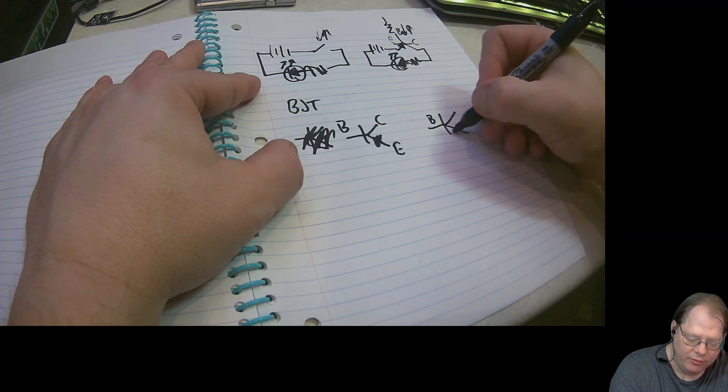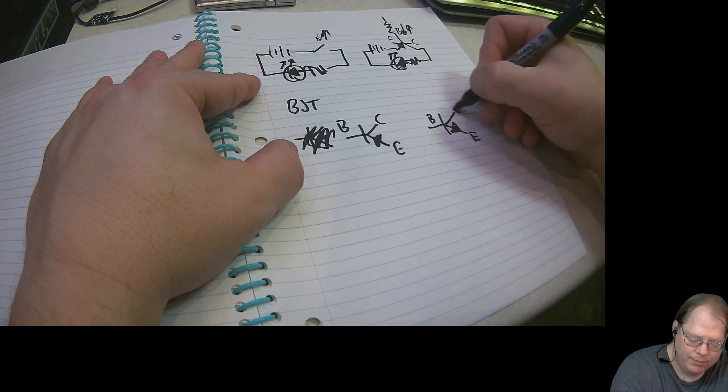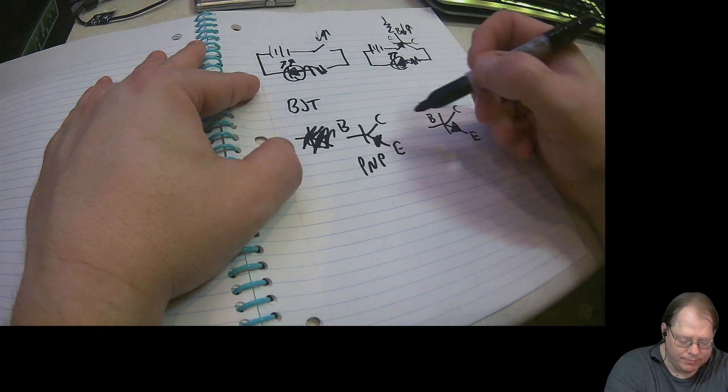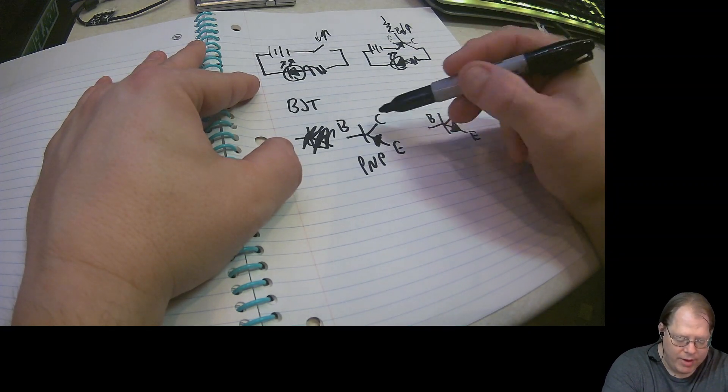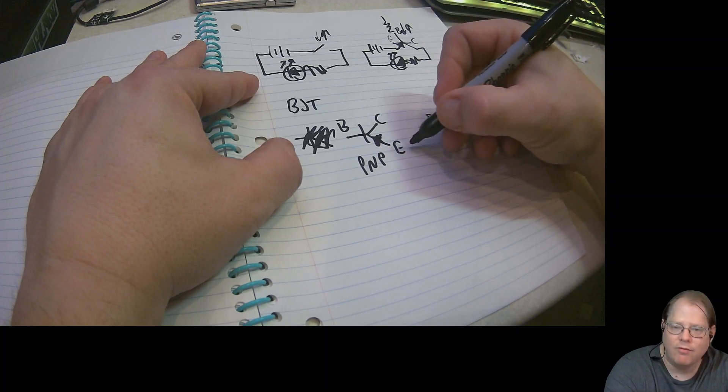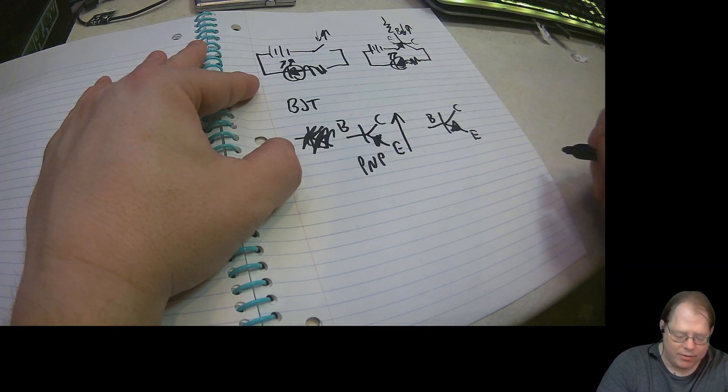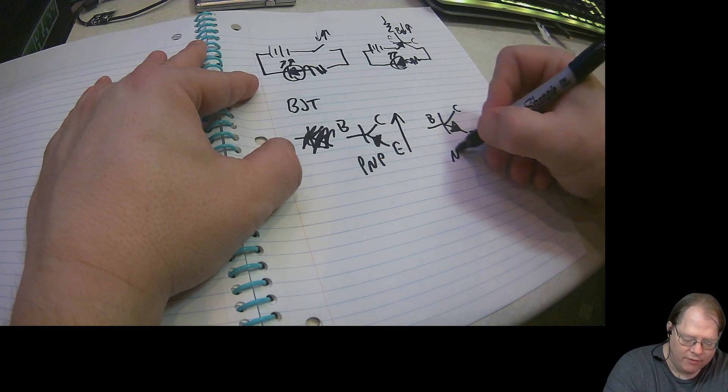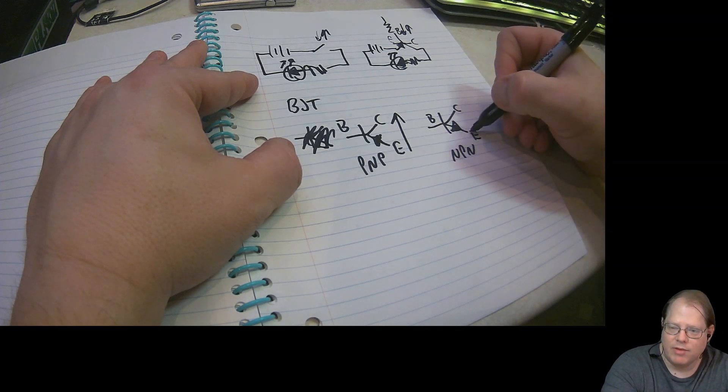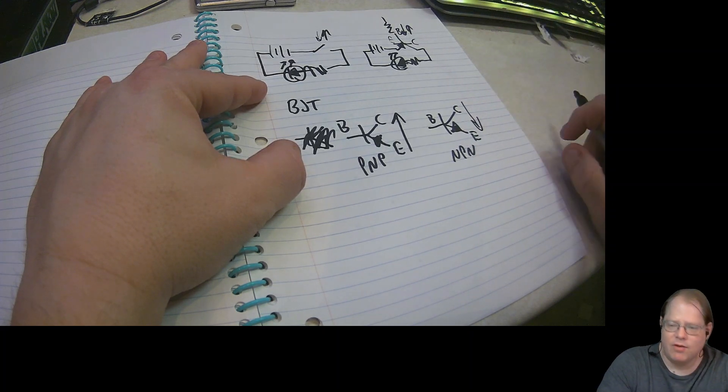And just talk amongst yourselves while I struggle with my lacking art skills. All right. So here we have what we're going to call a PNP transistor. We have our base collector emitter. And as you can see from the direction of the emitter, current is going to flow from the emitter into the transistor and out the collector. In the case of an NPN transistor, we've got the direction going the other way. Current is going to flow from collector to emitter.